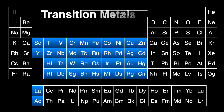Cadmium belongs to a large group of elements in the middle of the periodic table called the transition metals. These elements are defined as ones with an incomplete D shell of electrons, also known as the D block of the periodic table. Cadmium is the last element in its row that's a member of the D block, though there is some debate among chemists as to whether cadmium really belongs there.